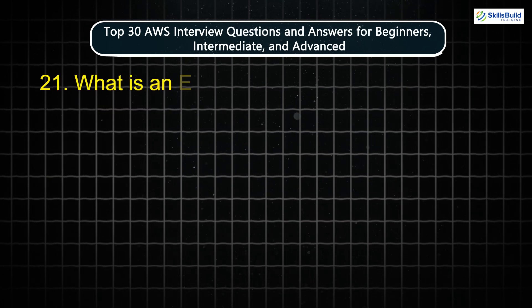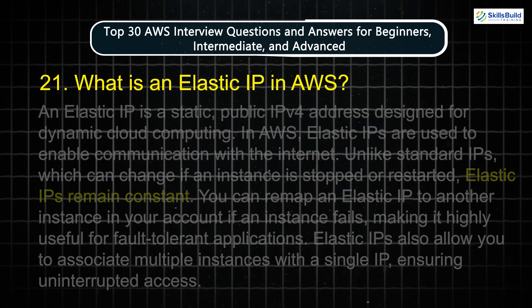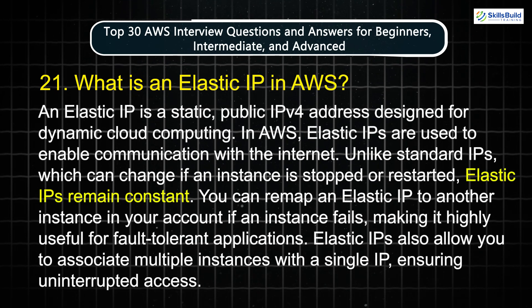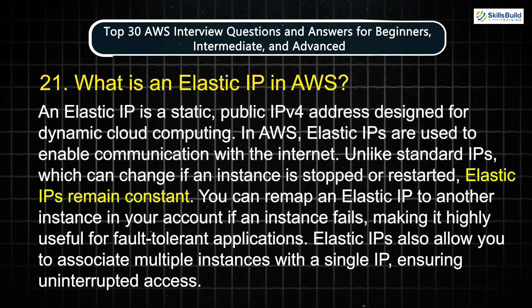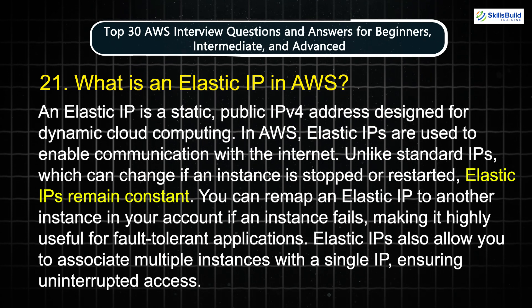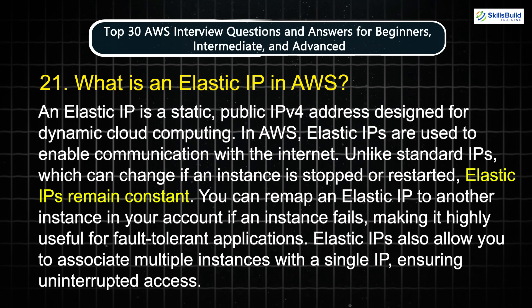Question 21: What is an elastic IP in AWS? An elastic IP is a static public IPv4 address designed for dynamic cloud computing. In AWS, elastic IPs are used to enable communication with the Internet. Unlike standard IPs, which can change if an instance is stopped or restarted, elastic IPs remain constant. You can remap an elastic IP to another instance in your account if an instance fails, making it highly useful for fault-tolerant applications. Elastic IPs also allow you to associate multiple instances with a single IP, ensuring uninterrupted access.